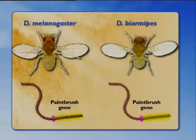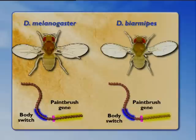There's a gene — we're just going to call it the paintbrush gene — whose coding sequence is shown here in yellow, in the same sort of schematic arrangement that we showed you for the stickleback. There are switches for this paintbrush gene that govern how it's used in the body.